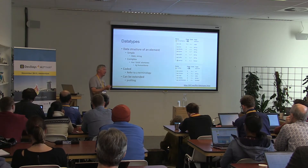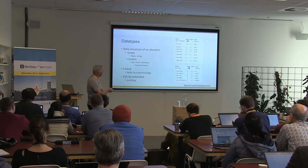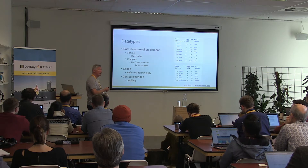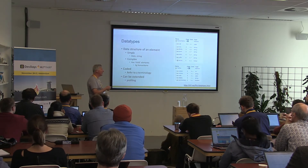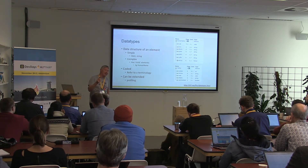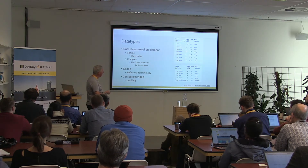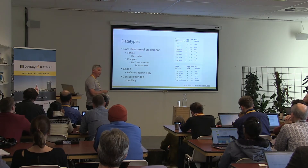A complex data type has child elements inside it. For example, the HumanName data type can have a 'use' — what is this name being used for — a textual representation, a family name, given name, prefix, and so forth. Each of these sub-elements has its own multiplicity: a HumanName element can have one and only one family name, but it can have many given names.